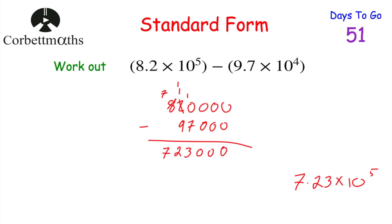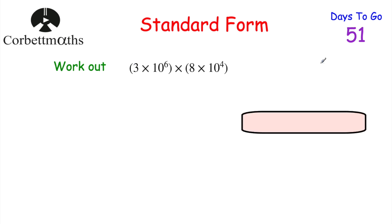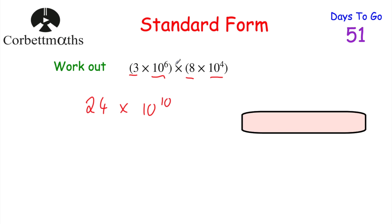Now let's look at multiplying numbers in standard form — this is a non-calculator question. For 3 × 10⁶ × 8 × 10⁴, we can use laws of indices. First multiply the numbers at the front: 3 × 8 = 24. Then for 10⁶ × 10⁴, same base so add the powers: 6 + 4 = 10, giving 24 × 10¹⁰. But 24 is not between 1 and 10, so we make it 10 times smaller: 2.4, and make the power 10 times bigger: 10¹¹. So the answer is 2.4 × 10¹¹.